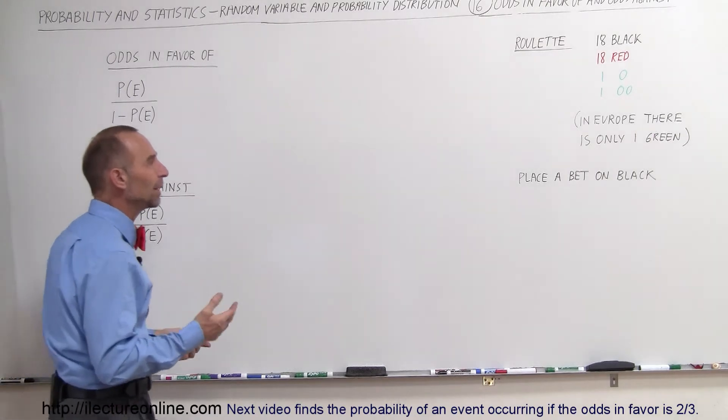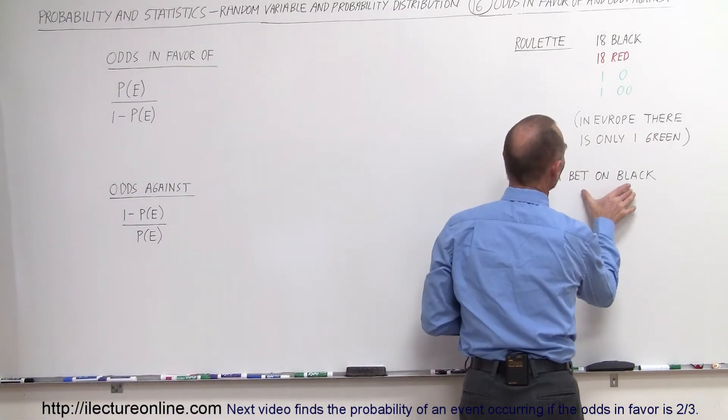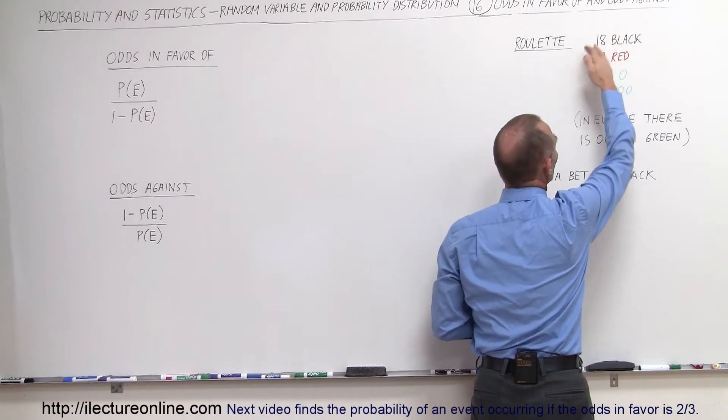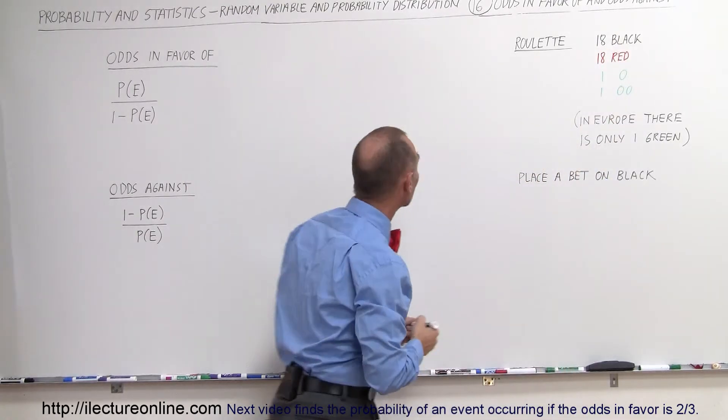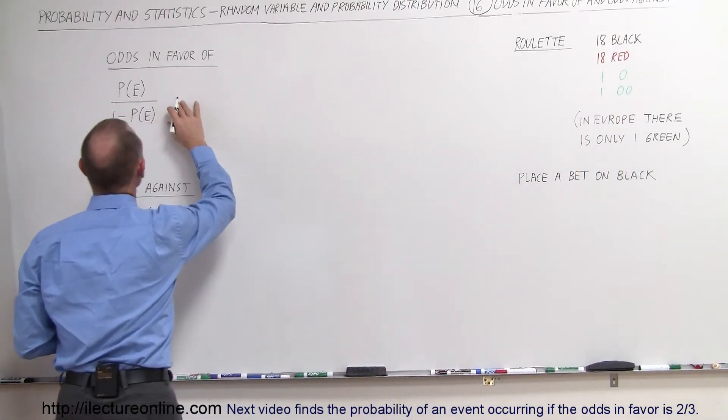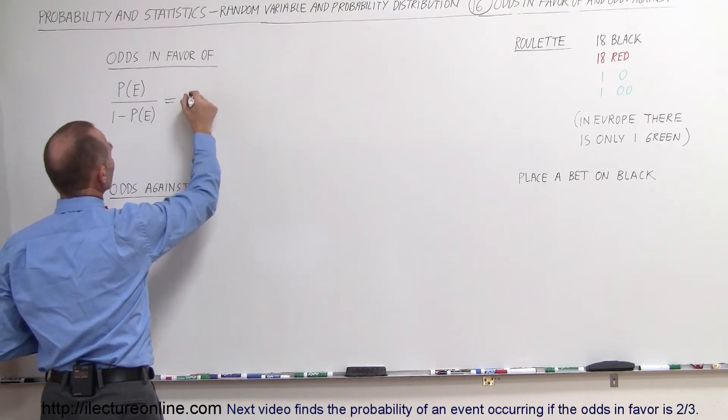What is the probability that we'll win? Well if you place a bet on black there's 18 black and there's a total of 38 possibilities. So for the probability of the event occurring, what I'm going to do here is there's another way of writing this.